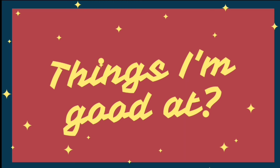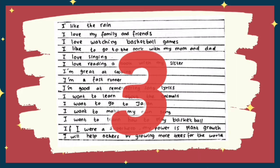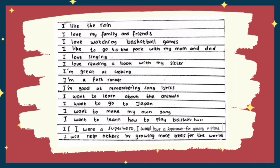Next, let's write down about the things that you are good at — things that you can do very well. Please write down at least three sentences. Here are some examples: I'm great at cooking. I'm a fast runner. I'm good at remembering song lyrics. You can write down about anything that you can do and know how to do.